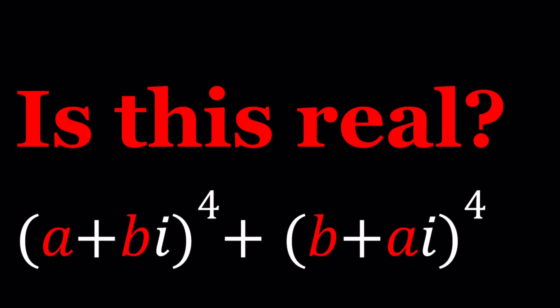The original problem is a little different. I'm going to talk about that towards the end but I modified this problem a little bit to make it kind of easier for ourselves. So the question is we are given (a+bi)⁴ + (b+ai)⁴ and we're gonna check if this is real or not.